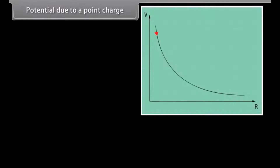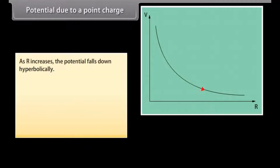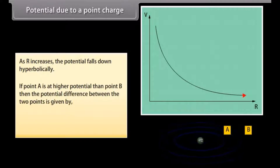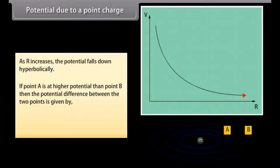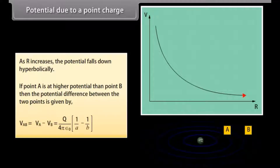We can show in the graph that as R increases, the potential falls down hyperbolically. If point A is at higher potential than point B, then the potential difference between the two points is given by VAB equals VA minus VB. Substituting the values of VA and VB, we get VAB equal to Q by four pi epsilon naught multiplied by one upon A minus one upon B.